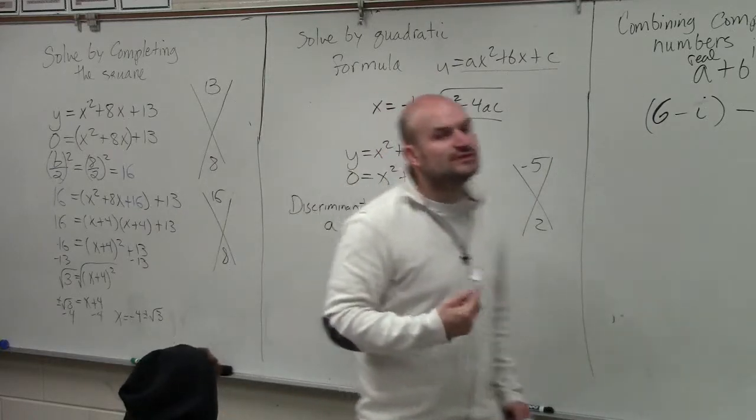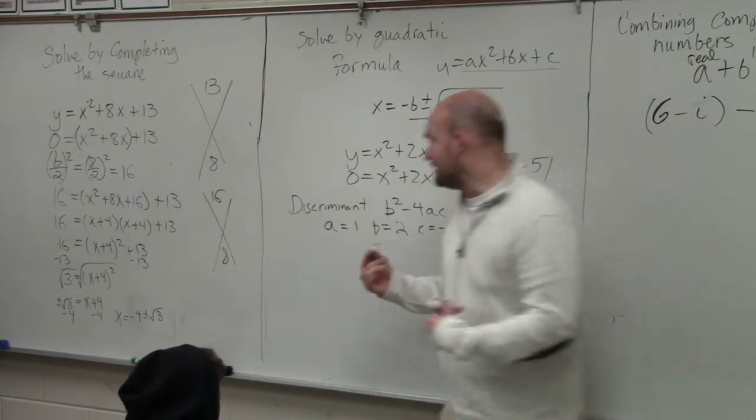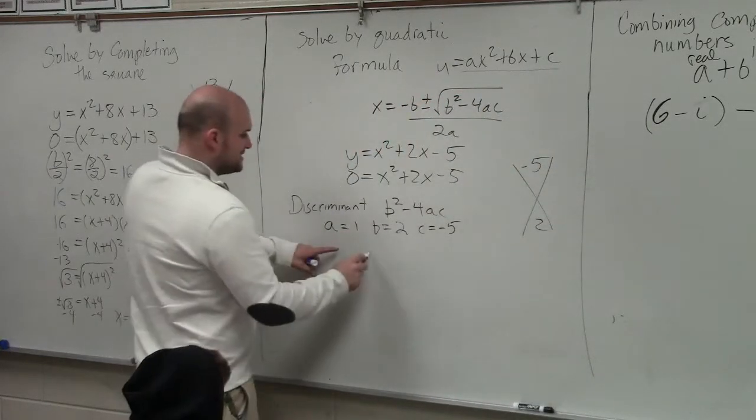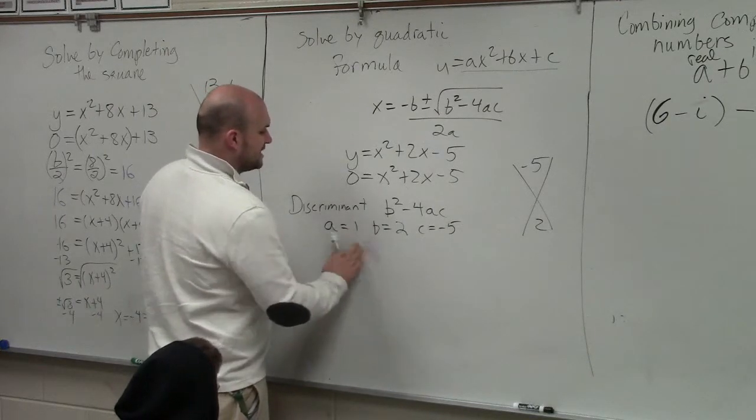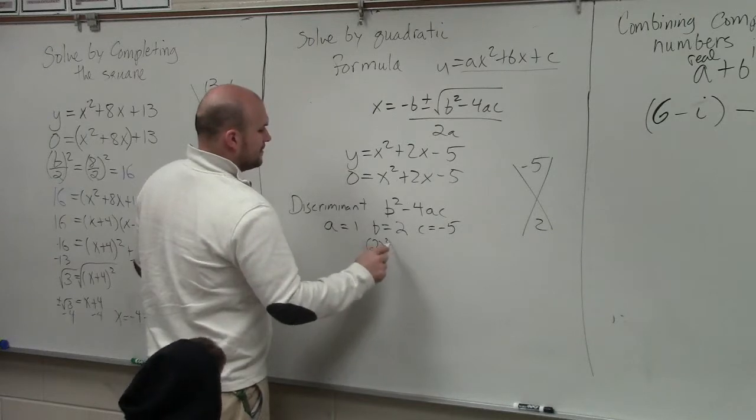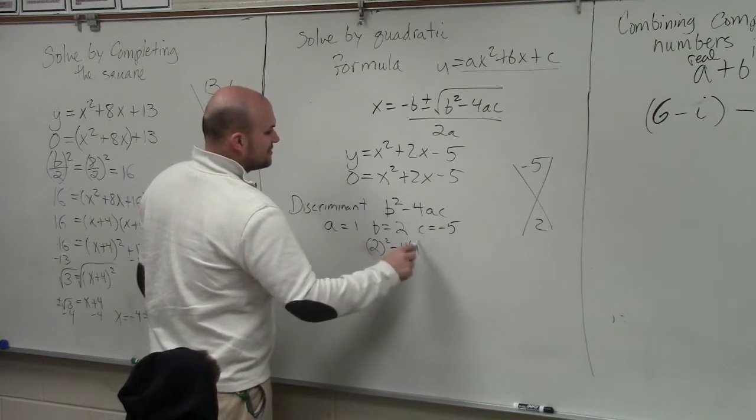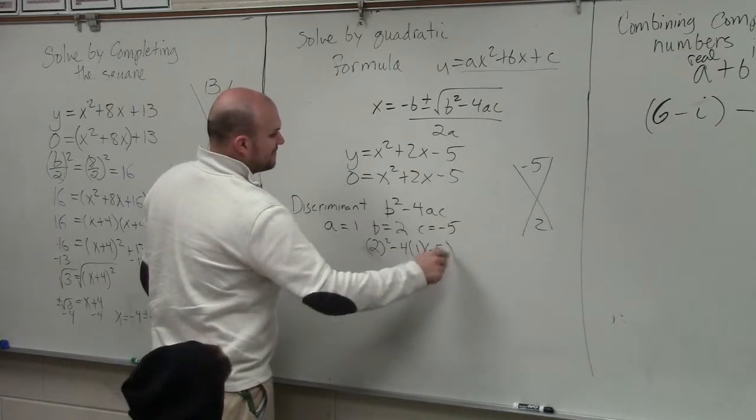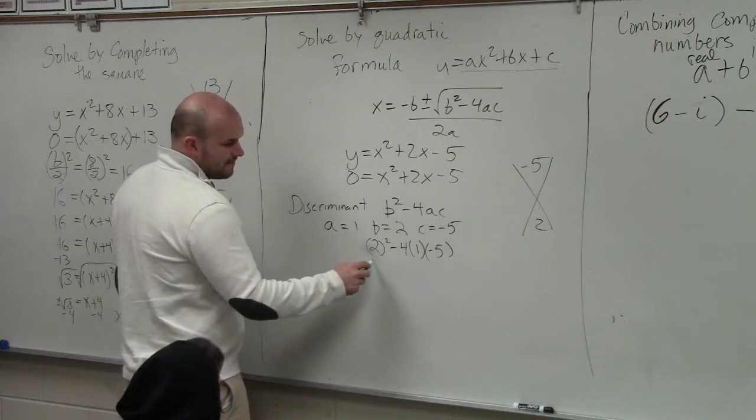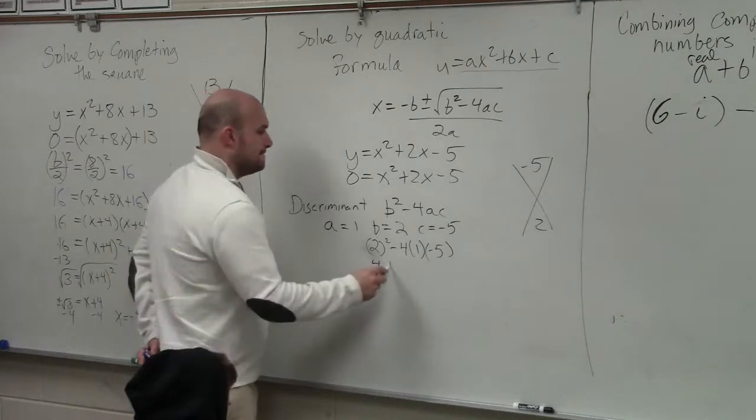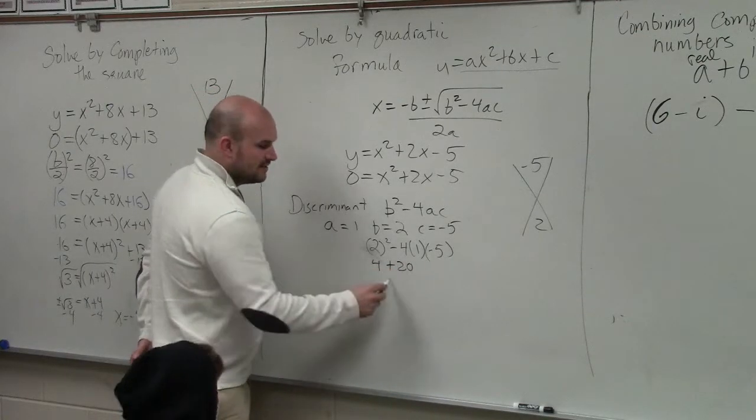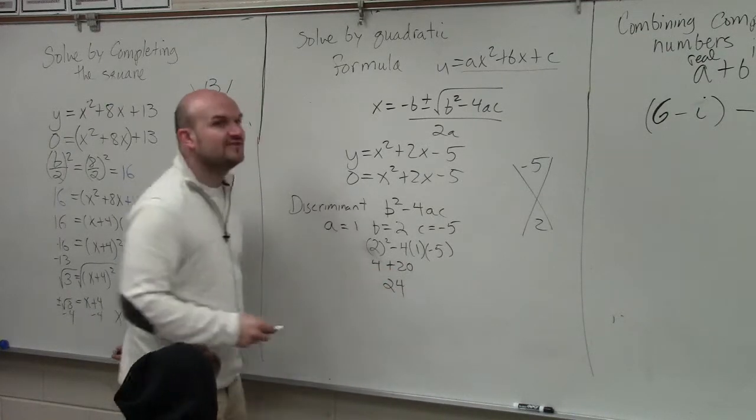So the first thing we do, ladies and gentlemen, is identify what the discriminant is. So I take 2 squared minus 4 times a, which is 1, times c, which is negative 5. 2 squared is 4. Negative 4 times 1 times negative 5? Positive 20. So therefore, my number is 24.